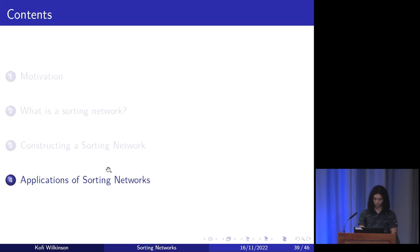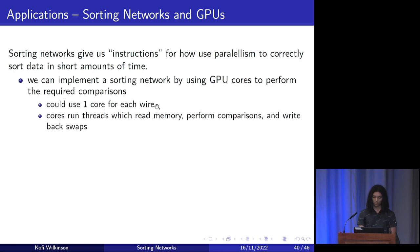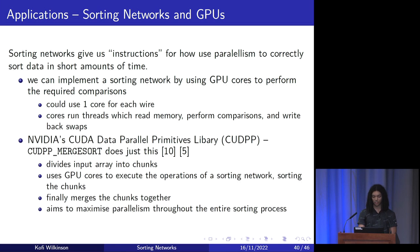Finally, let's look at some potential applications. One way to view sorting networks is as a set of instructions for using parallelism to correctly sort data quickly. We can implement a sorting network using GPU cores to perform the required comparisons — one core per wire, with threads reading memory, performing comparisons, and writing back swaps. NVIDIA has a library called the CUDA Data Parallel Primitives Library (CUDPP), which includes a function CUDPP merge sort that does exactly this: dividing the array into chunks, using GPU cores to execute sorting network operations on those chunks, and merging the sorted chunks. It aims to maximize parallelism throughout the entire sorting process.